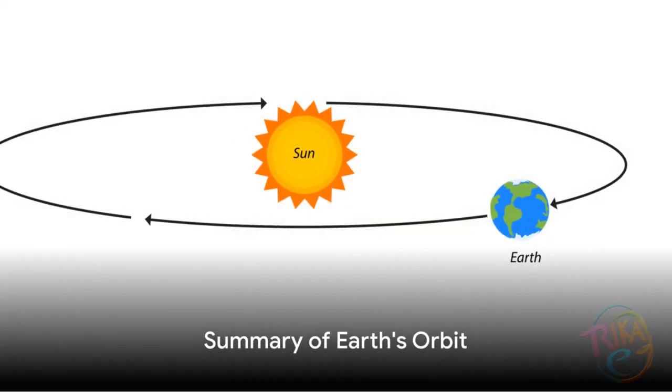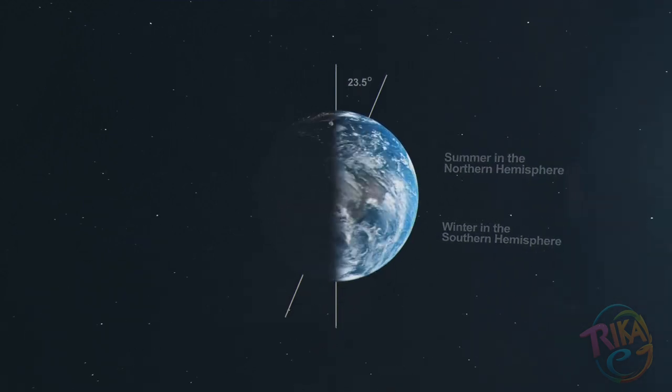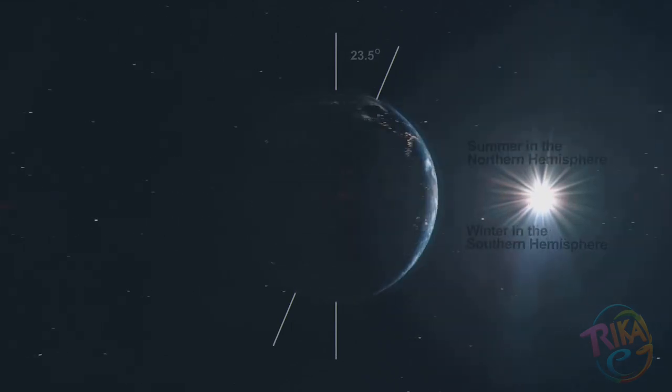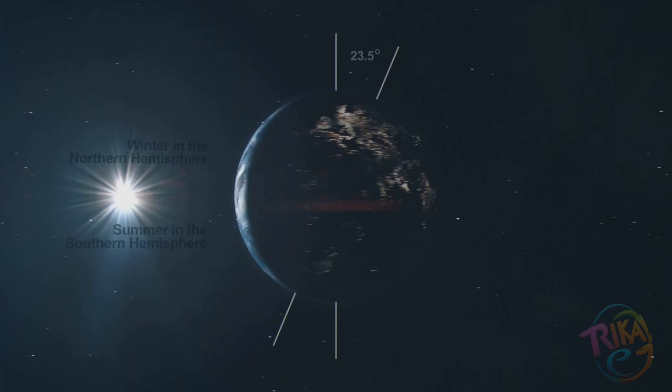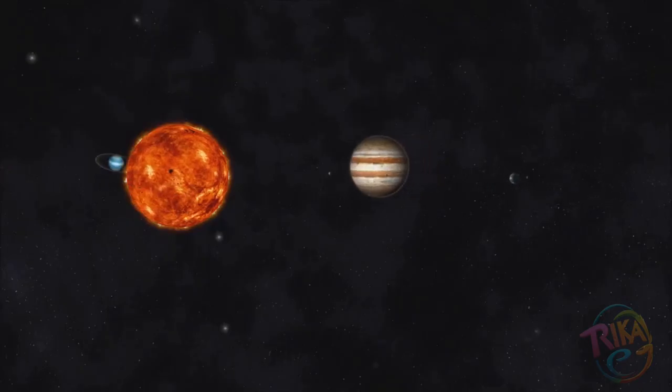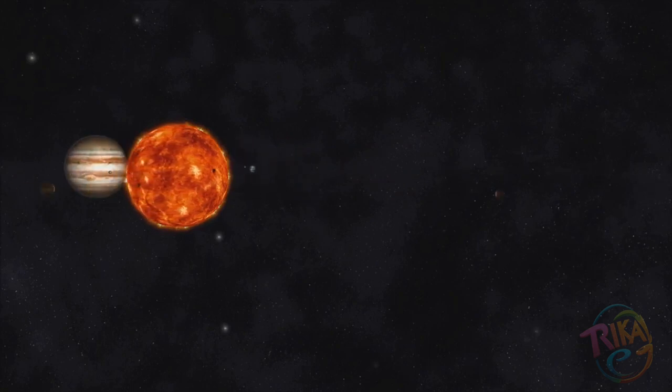To summarize, the Earth orbits the Sun due to the gravitational pull of the Sun, which creates a well in the fabric of space-time that the Earth falls into. However, the Earth's sideways motion prevents it from falling directly into the Sun, instead creating a curved path or orbit. This orbit is not a perfect circle, but an ellipse, as per Kepler's first law of planetary motion.